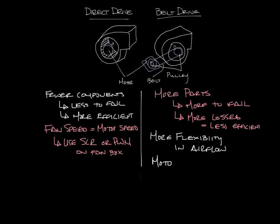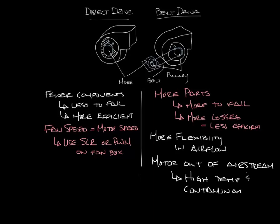In a belt drive fan, the motor is outside of the air stream. So this is good if you have applications where you don't want the motor in the air stream, like high temperature applications or contaminated air applications. Also, larger fans typically run at lower speeds which you can achieve with the pulleys. Whereas lower RPM motors might be more expensive or the motor just can't be turned down that far.